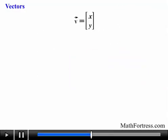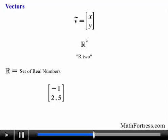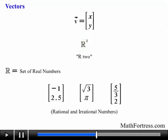The set of all vectors with two components that are ordered pairs is denoted by R², where R denotes the set of real numbers from which the components of vectors in R² are chosen. This means that vectors whose components are equal to [-1, 2.5], or [√3, π], or [5/3, 2] are all in R². These include the rational and irrational numbers of the real number system.